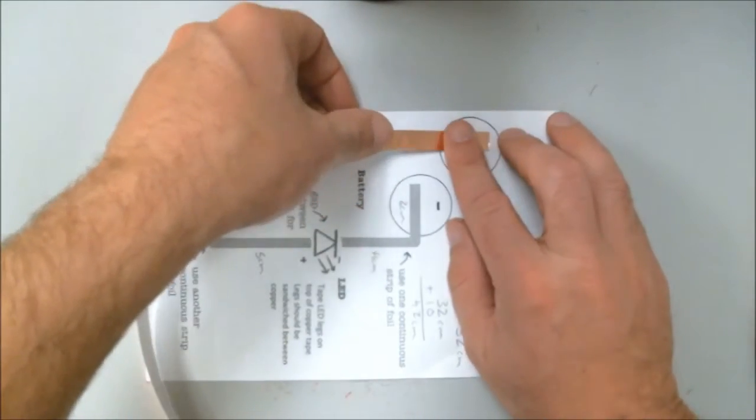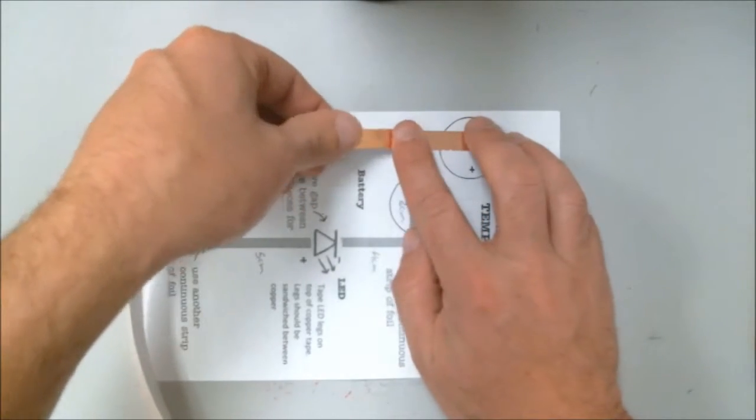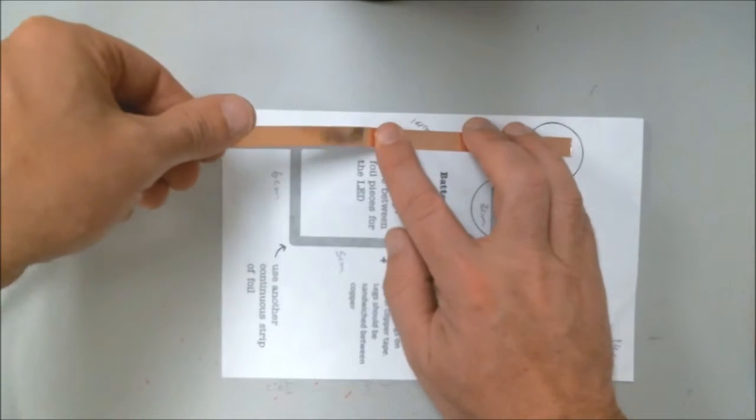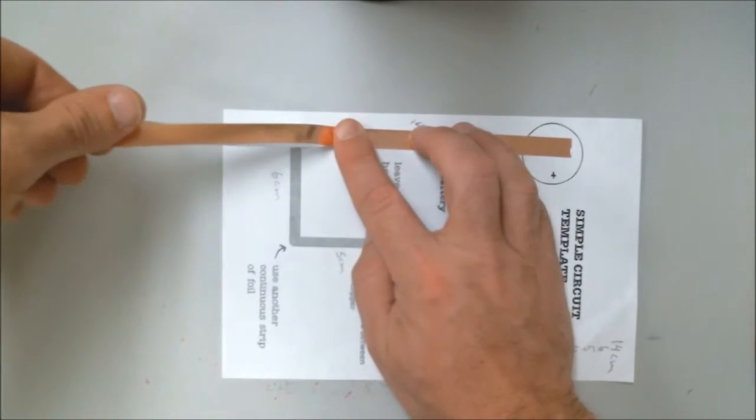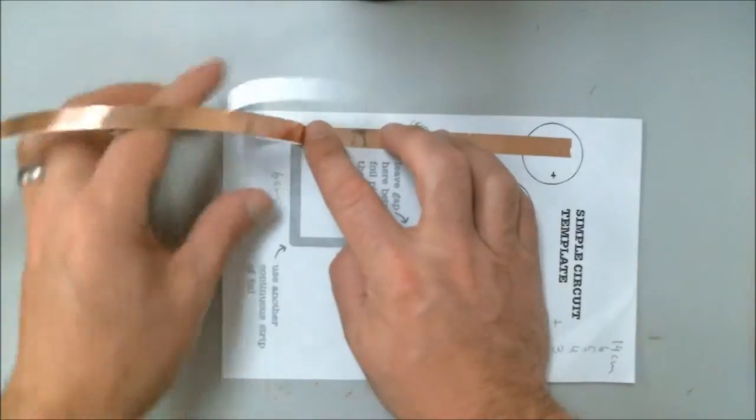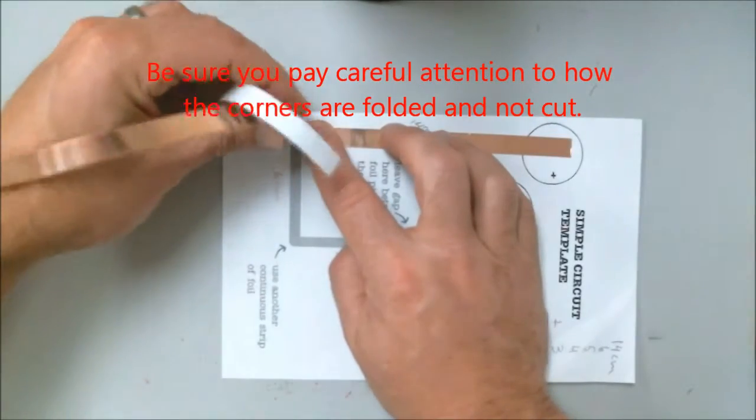I'm just going to peel and stick as I go, making sure to try to keep it nice and straight. I'm going to stop at my first corner without peeling past it.